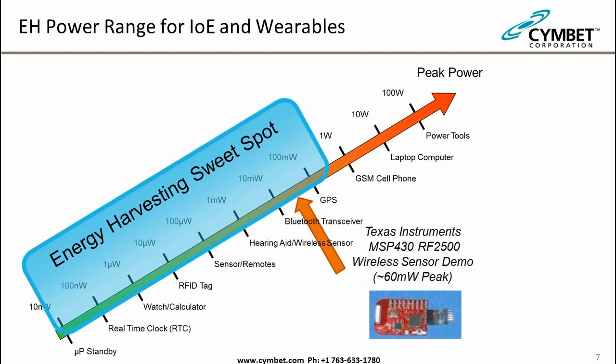This slide shows the power spectrum we'll discuss today, ranging from nanowatts up through microwatts into the milliwatt range. The higher wattage range covers mobile communications, M2M networking, and larger devices — that's outside today's scope. We're going to focus on solutions providing microwatt to milliwatt powering for IoE and wearables.